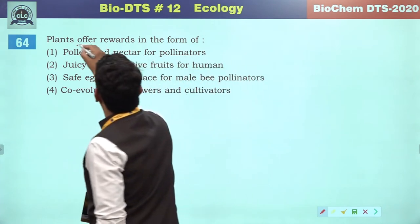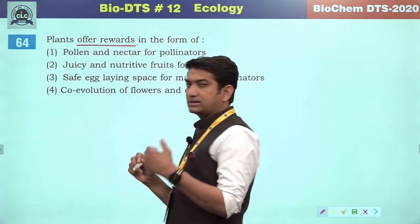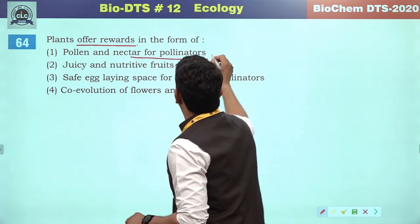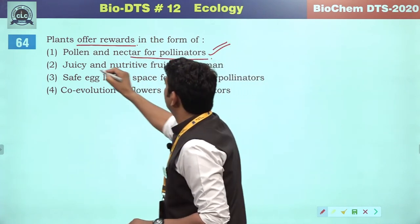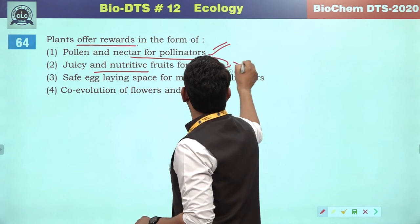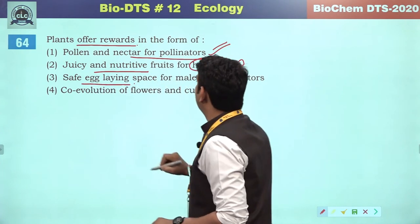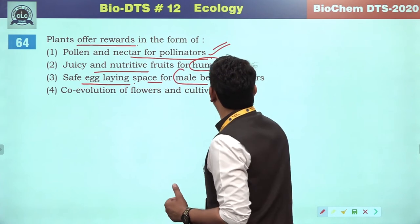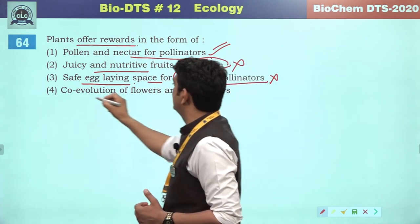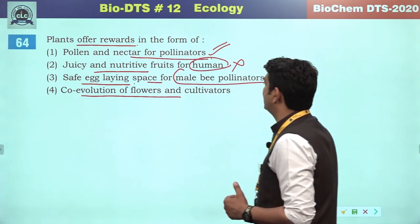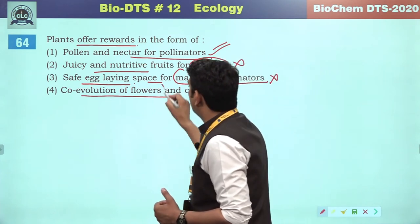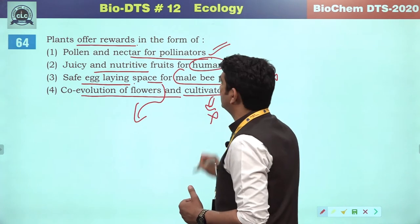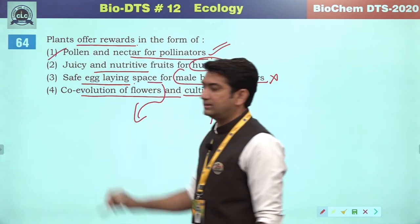Plants offer rewards in the form of — plants provide direct and indirect rewards. Direct reward is pollen and nectar for pollinators — correct. Juicy and nutritive fruits for humans — not concerned. Safe egg-laying space is an indirect reward but male bee pollinator reference is incorrect. Co-evolution of flowers and pollinators happens — not with cultivars. So the correct answer will be the first option.